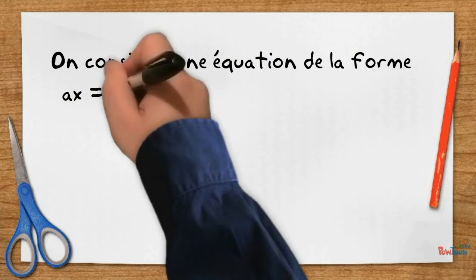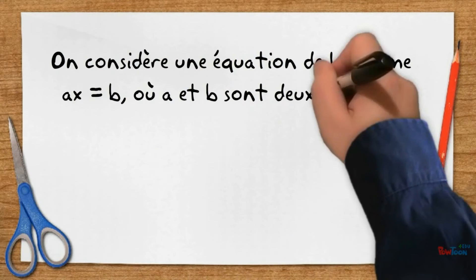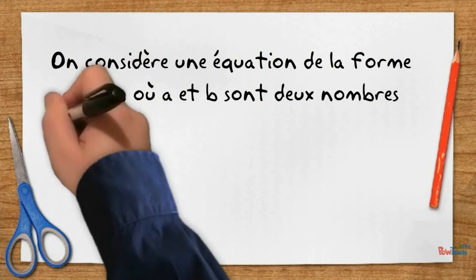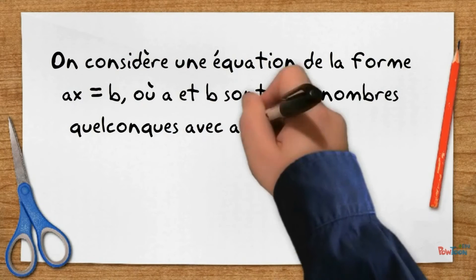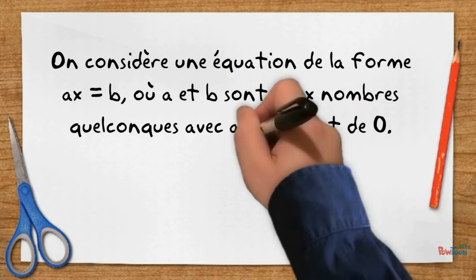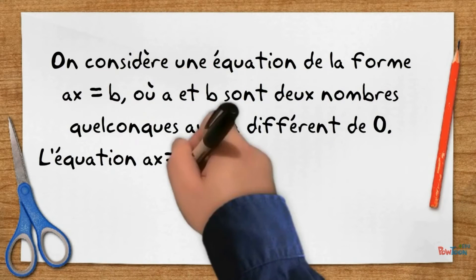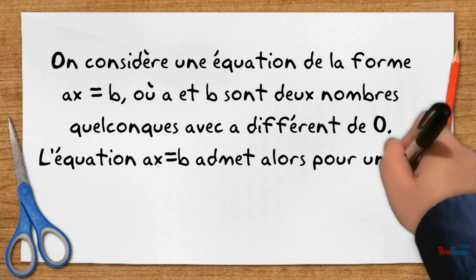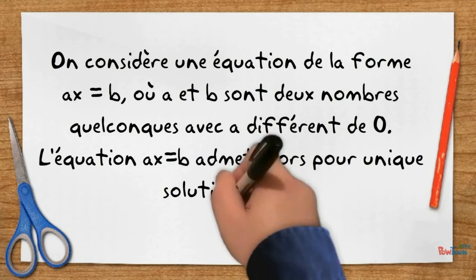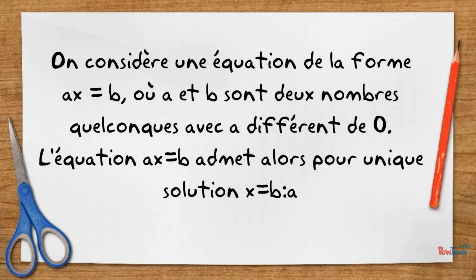Considère une équation de la forme ax égale b, où a et b sont deux nombres quelconques avec a différent de 0. L'équation ax égale b admet alors pour unique solution x égale b divisé par a.